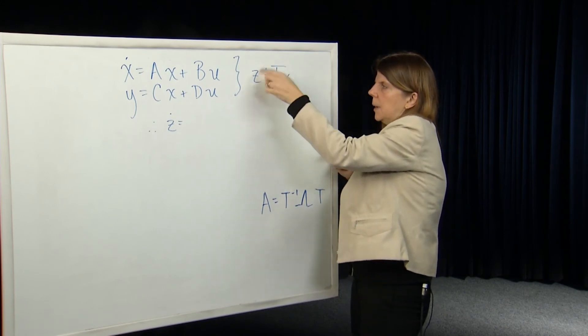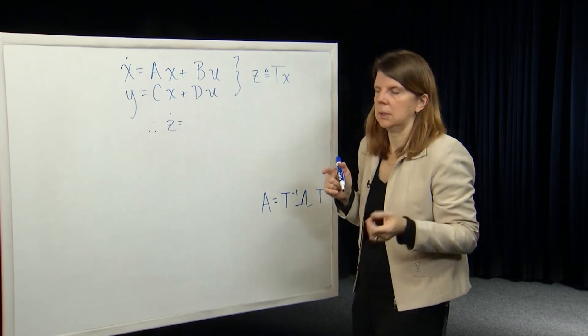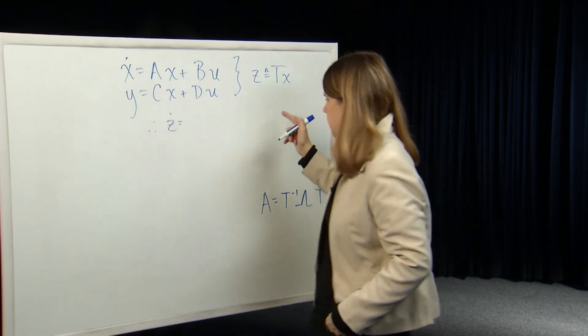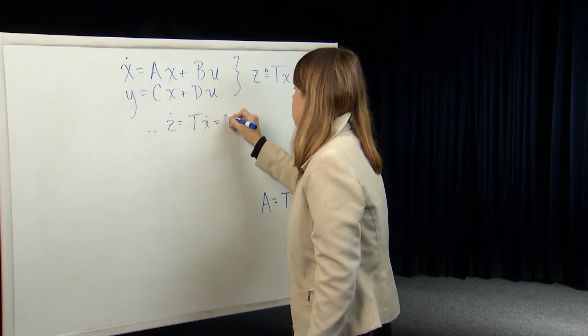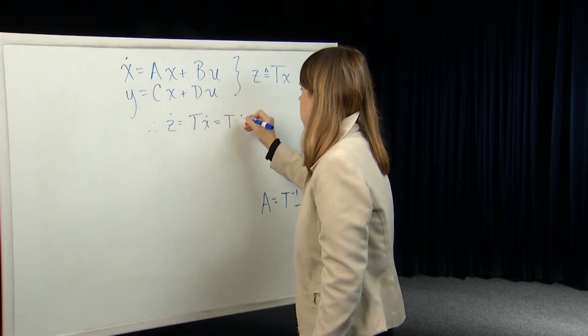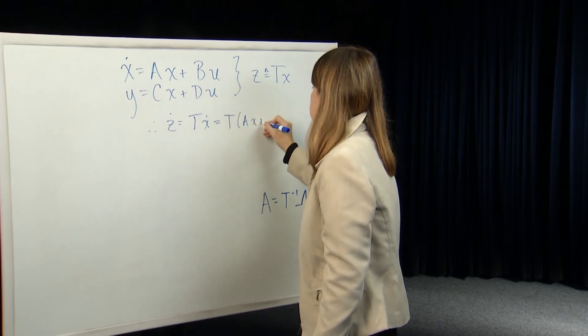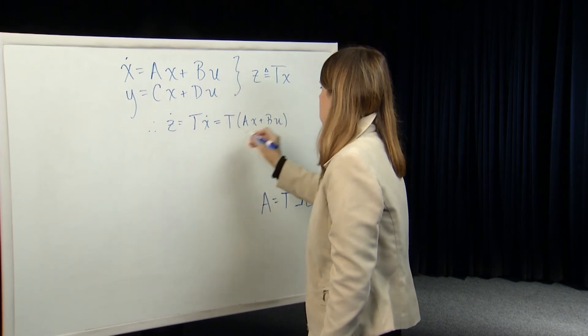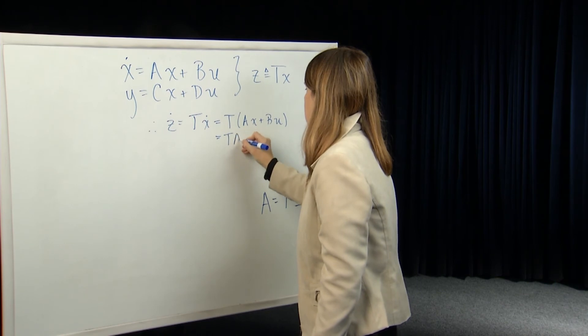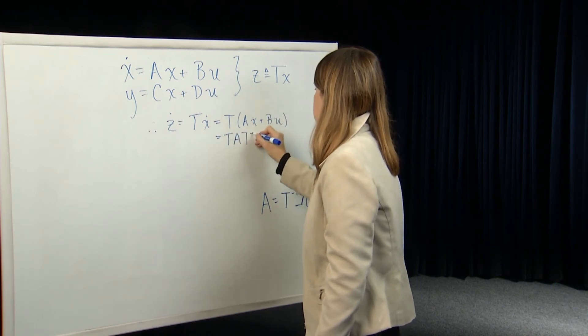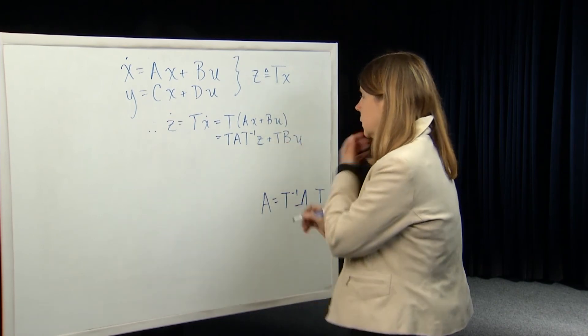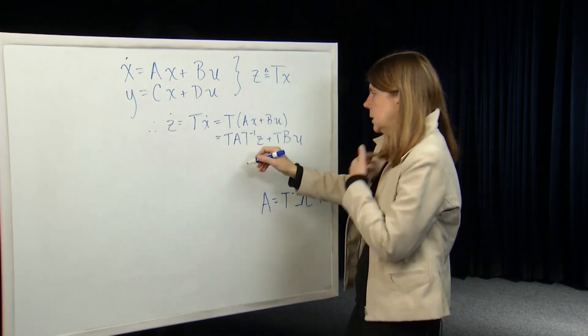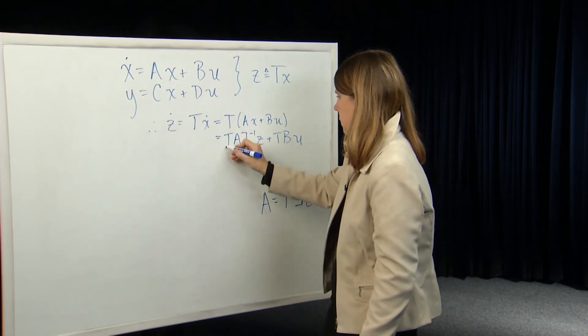So let's just write this out. z dot is equal to T x dot, which is T times Ax plus Bu, which is TAT inverse z plus TBu. And TAT inverse is just the matrix lambda.